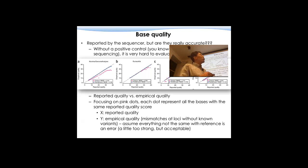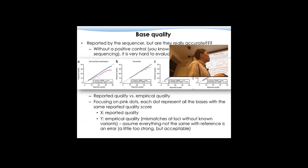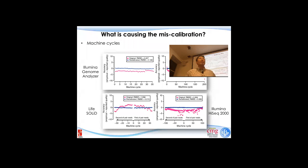Everything is kind of below this 45-degree line. That means the empirical quality is always lower than the reported quality — meaning they're lying. They say they are 0.1% chance of making a mistake, but actually they are 0.5%. So that's the part where we need to do some further investigation. At that time they evaluated several different sequencers — this is pretty early work.